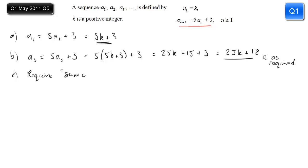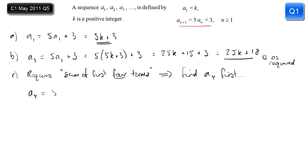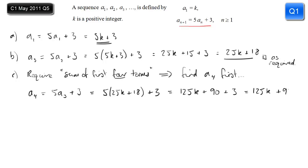Part c, first part, wants us to work out a particular sum. Looking at it, it's the sum of the first four terms in this series. We know the first three, so now we need to find the fourth term. We do five times the third term plus three — five times our answer from part b — add three, multiply out the brackets, tidy it up: 125k plus 93 is the fourth term.